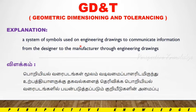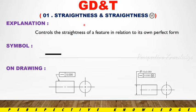GD&T is a system of symbols used on engineering drawings to communicate information from the designer to the manufacturer. Through engineering drawings, a design is fixed with its specifications. It provides information so that any manufacturer can produce exactly the same part in exactly the same way. That system is called Geometric Dimensioning and Tolerancing symbols.